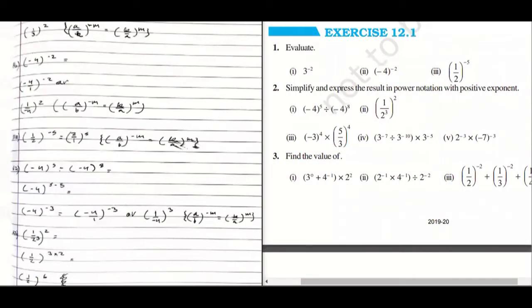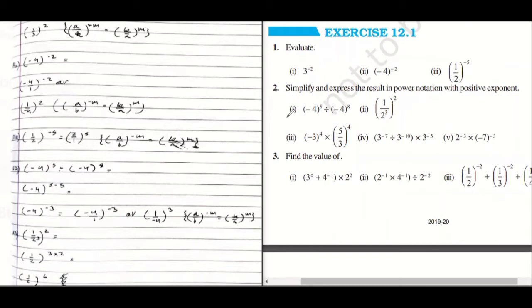Let us start with question number two. Simplify and express the result in power notation with positive exponent — that means the power should be positive. Like in this question, the power was negative and we were focusing on making it positive, so that was the answer. Now let us focus on the first one.